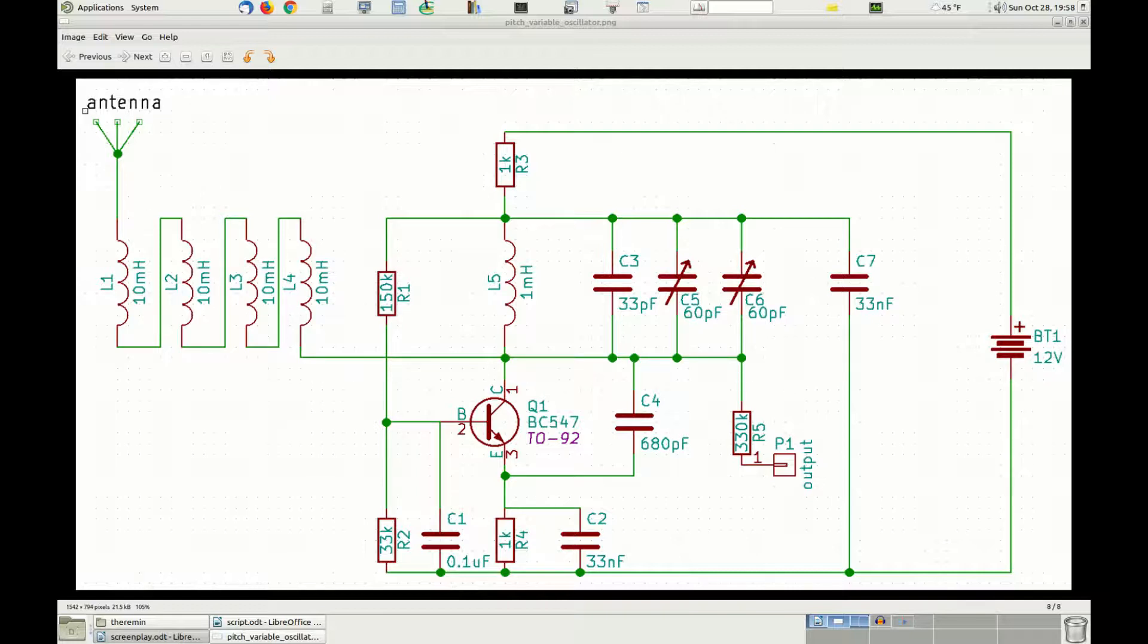The capacitor C3 is relatively low in respect to the one in the pitch reference oscillator, and this is to compensate for the extra capacitance introduced by the antenna. However, its value is determined really empirically, so when we will test the output signal of the theremin, we might have to adjust this value, increasing it or decreasing it a little bit. But that is for another time.